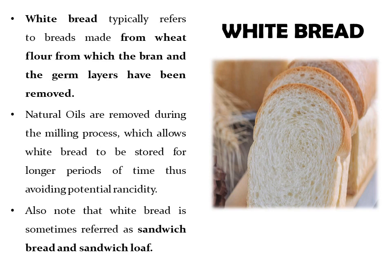On number one, we have white bread. White bread typically refers to breads made from wheat flour from which the bran and germ layers have been removed. Natural oils are removed during the milling process, which allows white bread to be stored for longer periods of time, thus avoiding potential rancidity. Also note that white bread is sometimes referred to as sandwich bread or sandwich loaf.